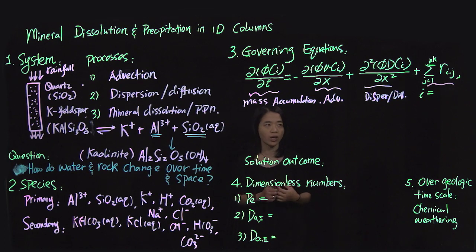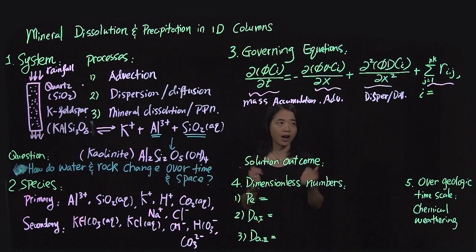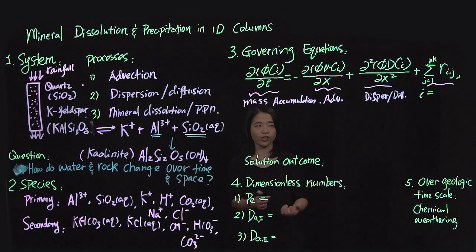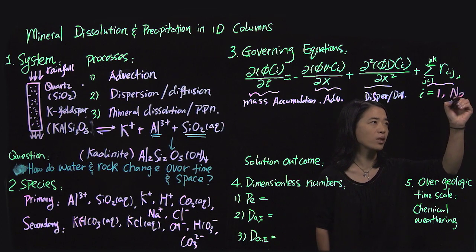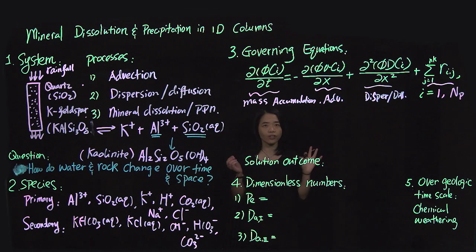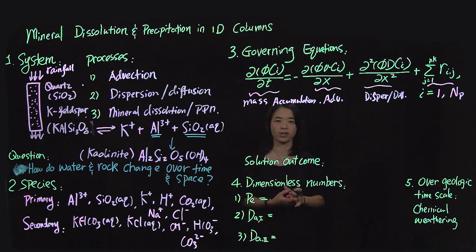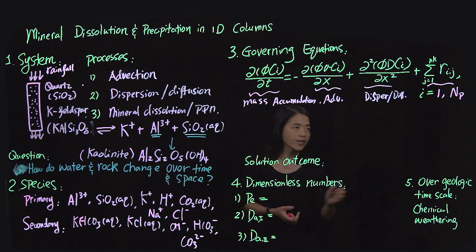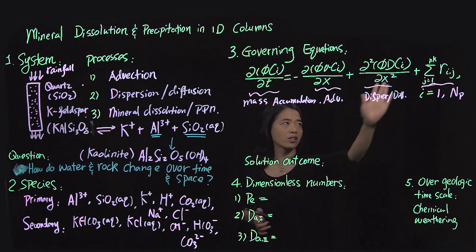And then the last term is new, right? It's a reaction term. So it would take into account essentially different types, the rates of different types of reactions that this species i is involved in. And you think about how fast these different reactions would change the concentration of species i. And then of course this i need to be written for 1 to np, which is the number of primary species. So you need to write for this system seven different equations to solve. But then on top of that you have, again, you have this number of secondary species you need to solve for in the form of algebraic relationships.